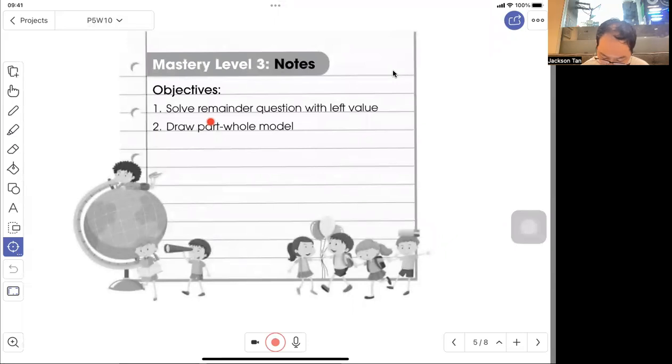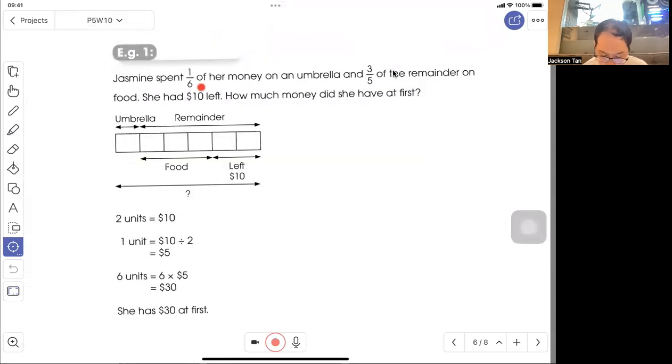Mastery Level 3: Solve remainder fraction of a leftover value. Jasmine spent 1/6 of her money on an umbrella and 3/5 of the remainder on food. She has $10 left. How much money did she have at first?